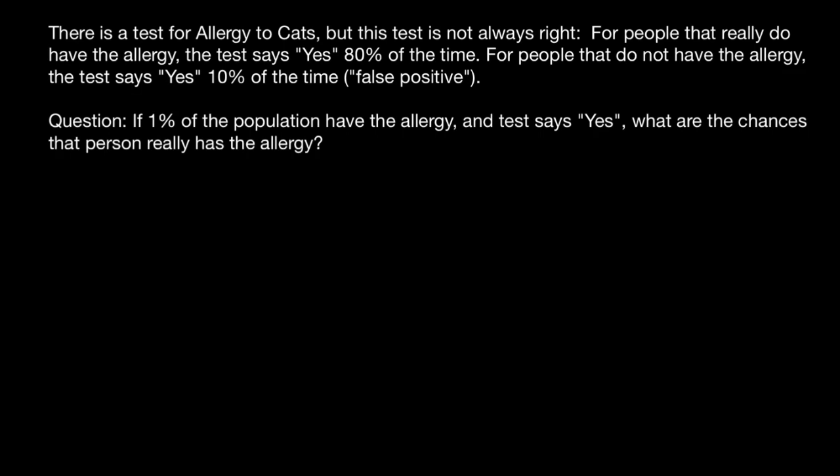I recommend you to pause the video here and try to solve this problem on your own first. When you are ready, you can run the video again and compare your answer with my answer and explanation. We can solve this type of problem using three different methods: one is called the 1000 method, another one is Bayes' theorem, and we can also solve it using the forked line method, which we usually use in genetics.